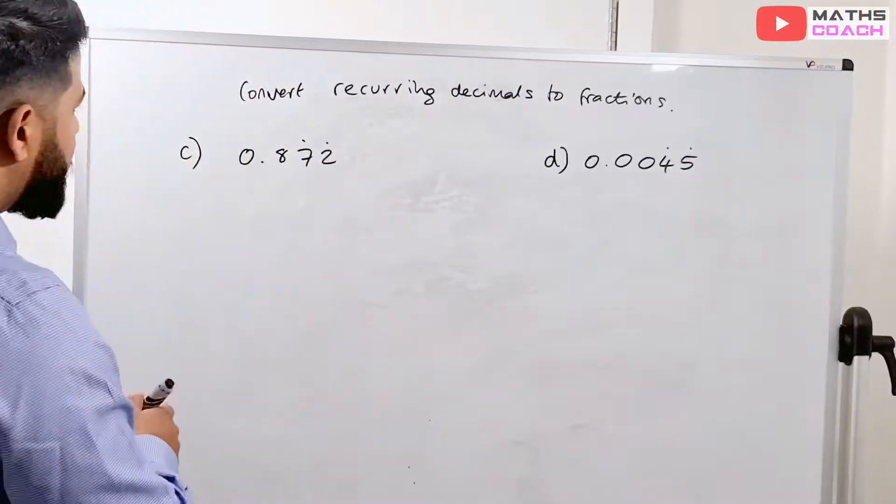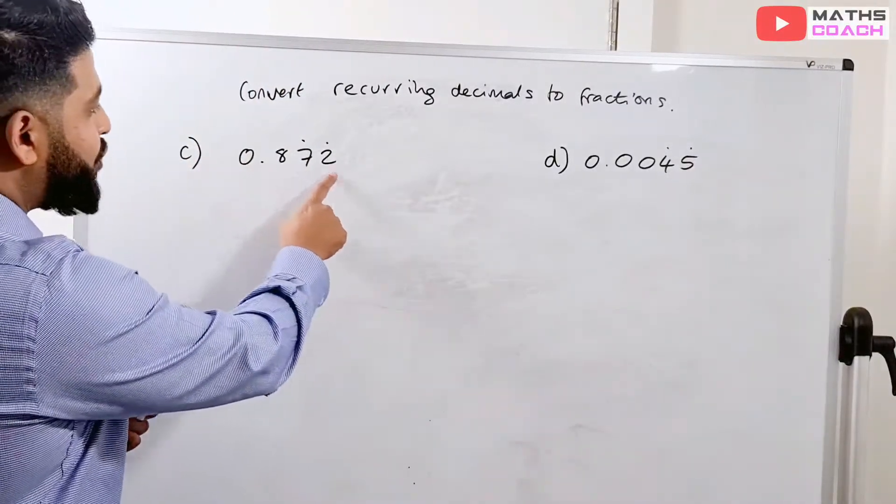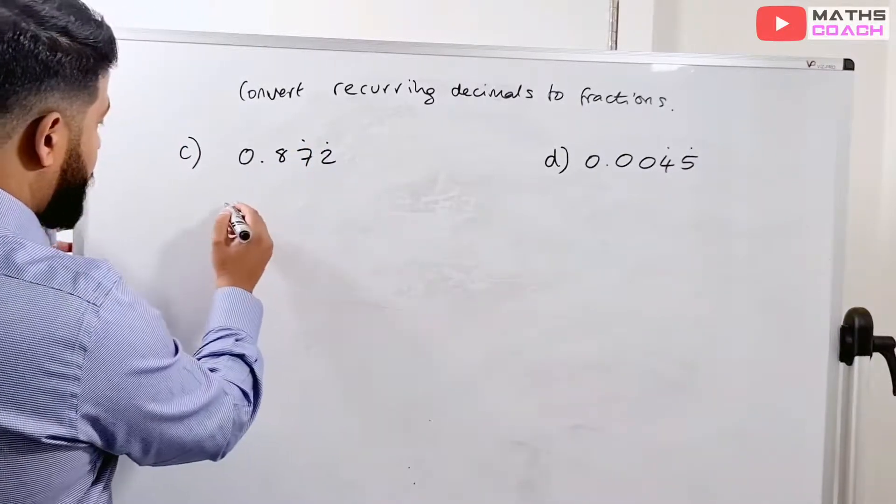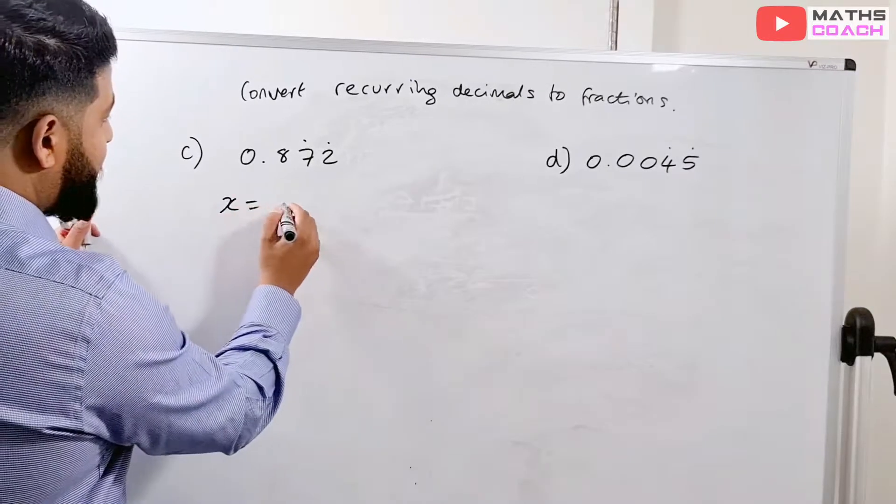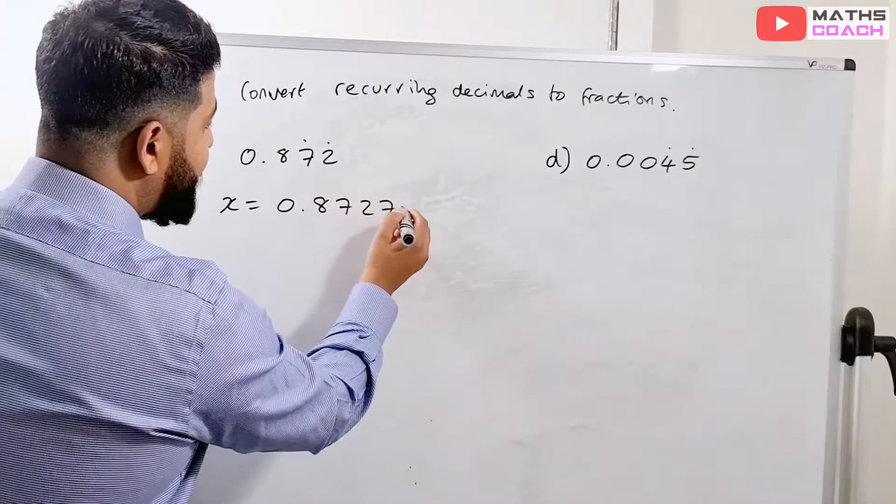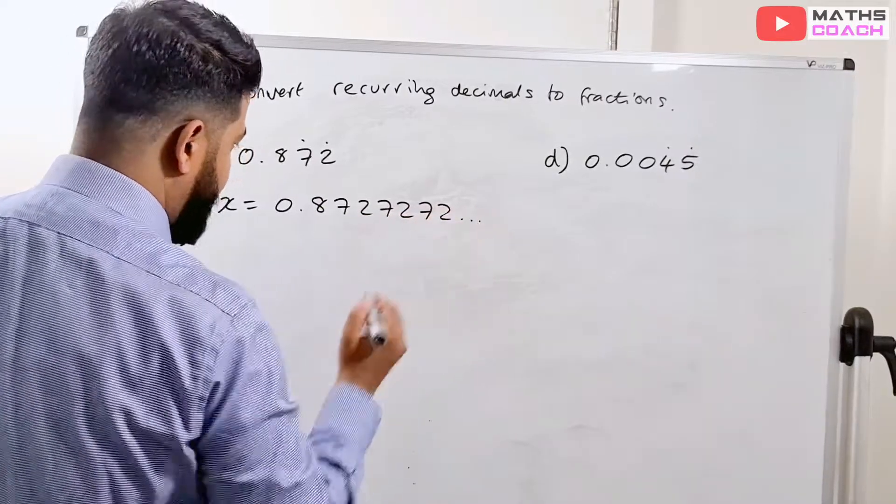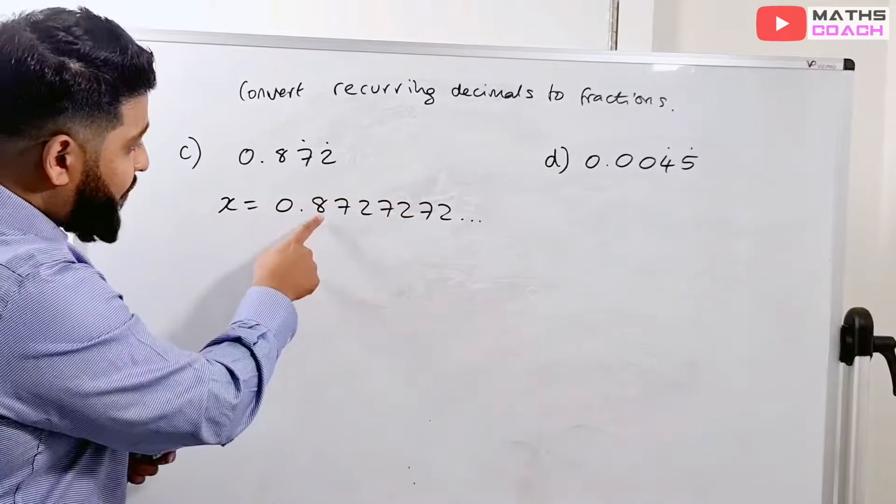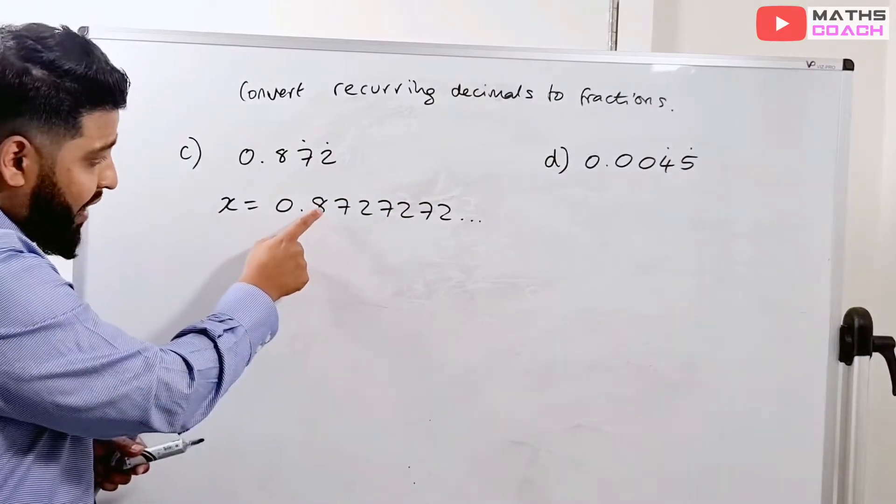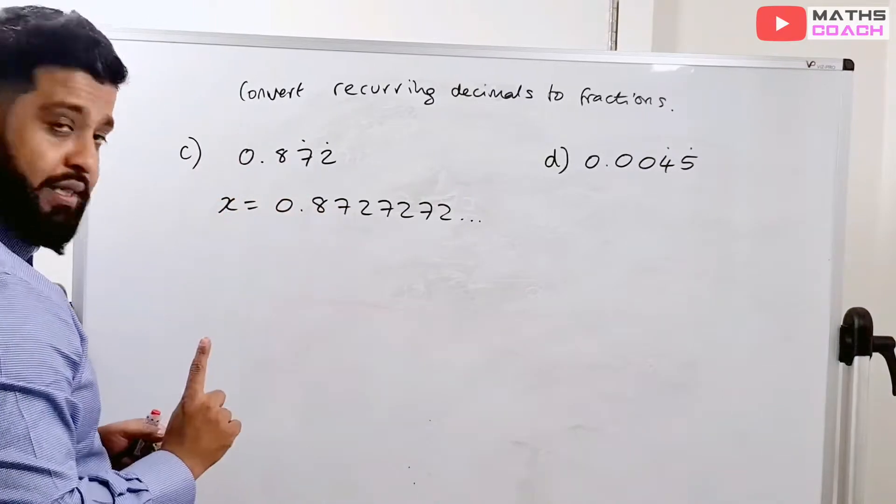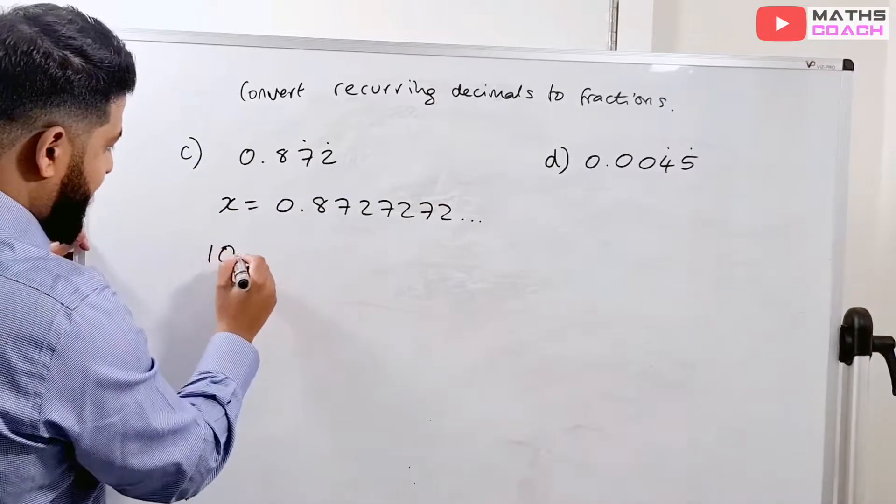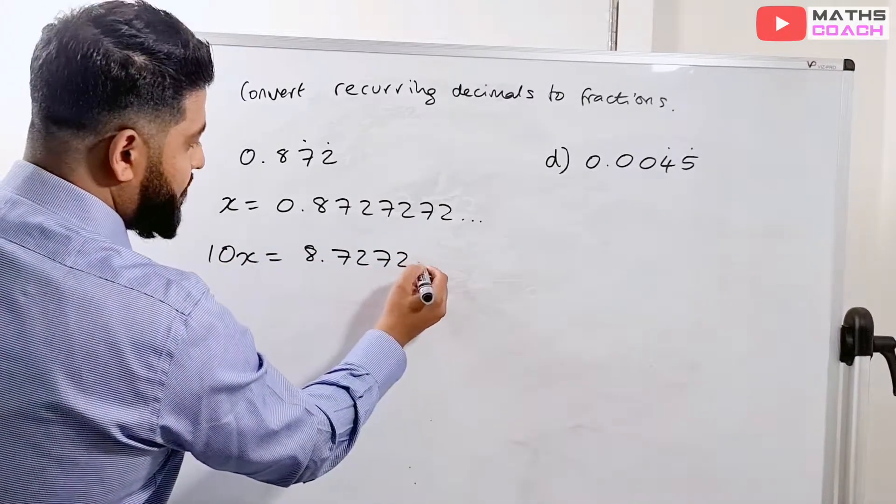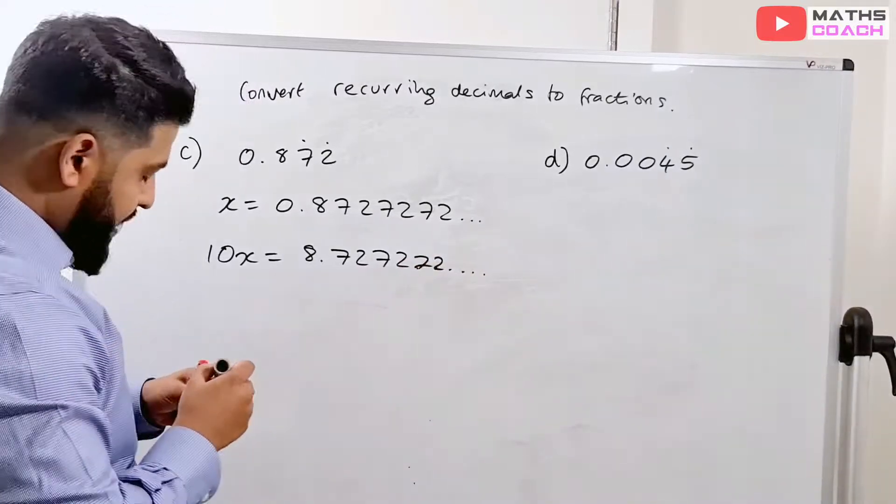Alright, so hopefully you've done the same at home. Let's have a look at these. So we've got 0.8727272. And I'm only repeating the 7 and the 2 because the dots are above the 7 and the 2. So let's say, as before, x is equal to 0.8727272, on and on. Now, it's the 7272 that repeats. So if I multiply this by 10, I can have the 8 in this position. So let's just do that. So 10x, let's start with that. 8.72727272, on and on.